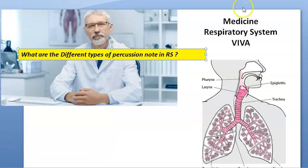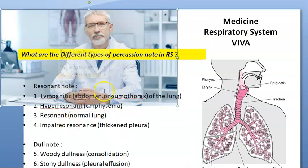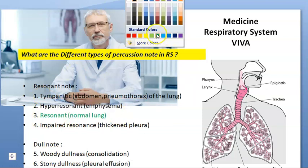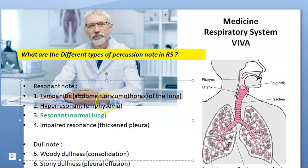What are the different types of percussion note? Sir, we can have resonant note and dull note. Like resonant note, we can have tympanic, hyper-resonant, resonant, or impaired resonant. Dull note can be woody dull or stony dull. Resonant means normal lungs. Hyper-resonant means emphysema — there will be more air. Tympanic means pneumothorax — there is air in the pleural cavity.